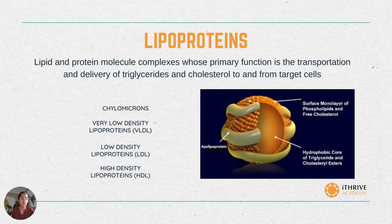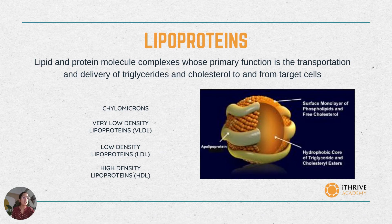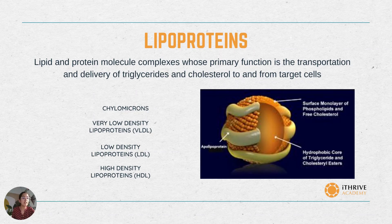Having understood about lipids and cholesterol, let's see how they are actually transported in the body. Lipids, by nature, are insoluble in water. As the main constituent of the body is water, all lipids such as cholesterol and triglycerides must bind to proteins to form lipoproteins, which are complexes of proteins and lipids in varying proportions that help in the transportation of lipids in our body. There are four major classes of circulating lipoproteins, each with its own characteristic protein and lipid composition.